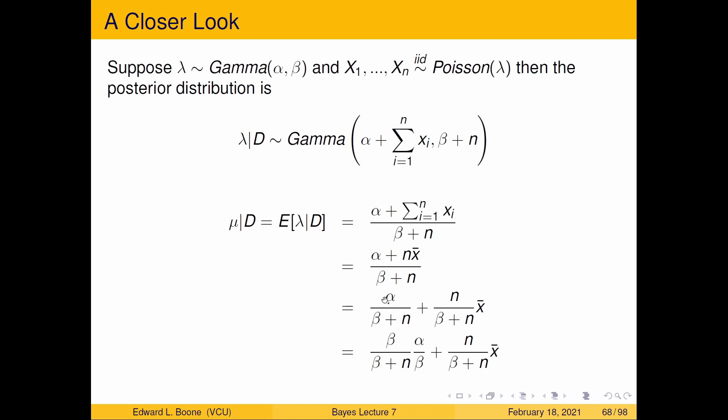And if I do this and then multiply this one by β over β, I get α/β, which is my prior mean. And over here, I have x̄, which is the mean of the data.